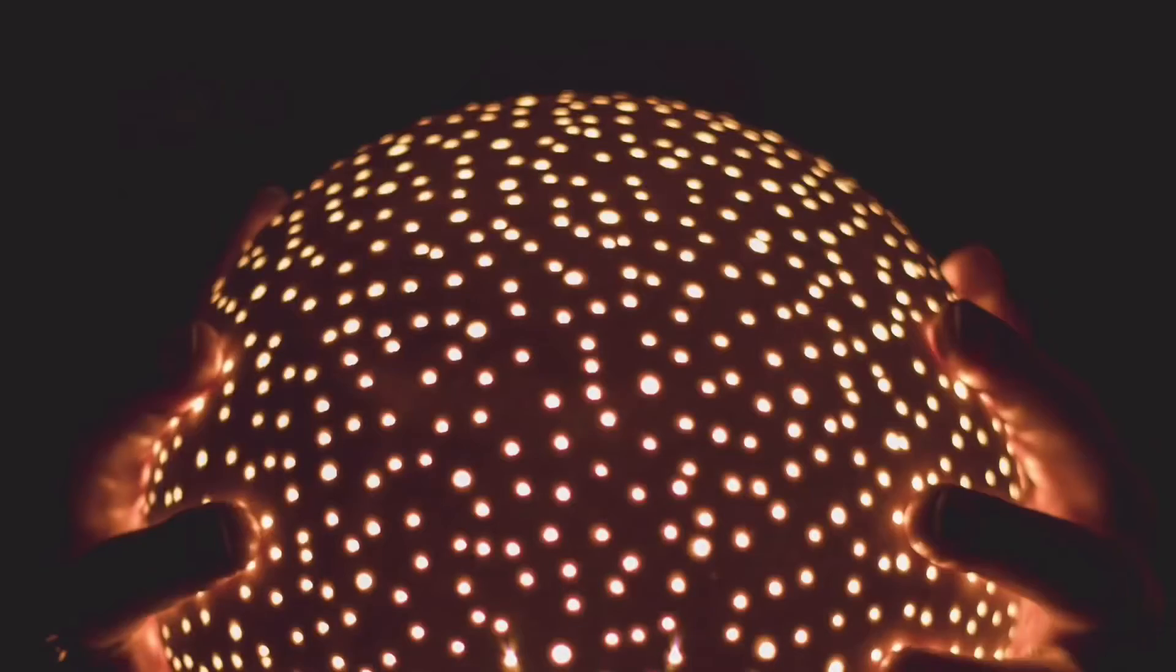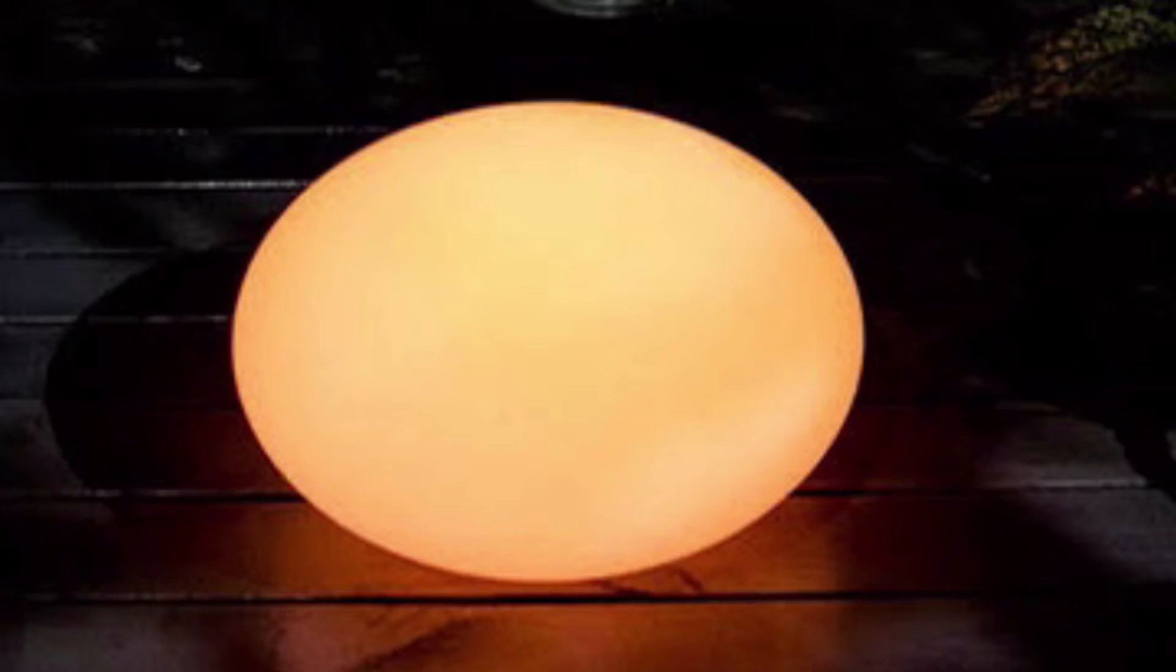There are two things we need to understand: awareness and the mind. Let's define what they are. Let's define awareness as a glowing ball of light, an orb that can float around.